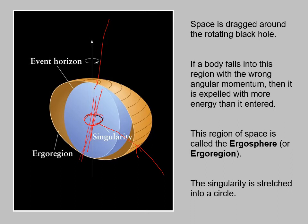The region of space near the black hole where all this weird stretching happens and where you can only fall in from one direction is called the ergo region or ergosphere — ergo from the Latin for work — because theoretically if you shoot something into the black hole the wrong way, it's going to come out with more energy than it went in with.